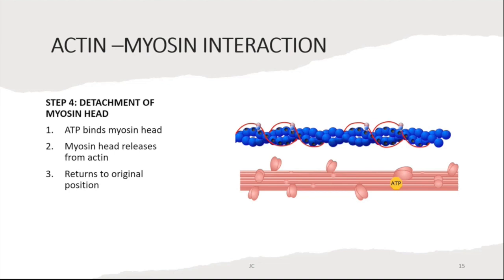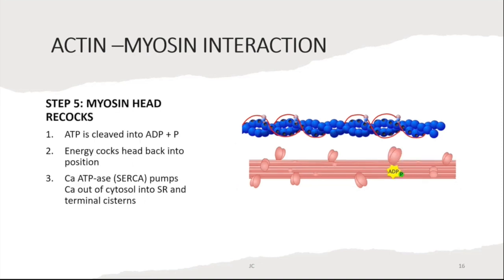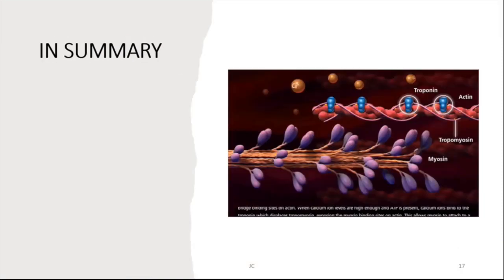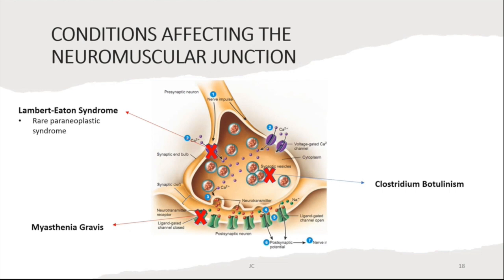This energy dependence explains why rigor mortis sets in after death when no ATP remains. Step five: the myosin head re-cocks when ATP is cleaved into ADP and phosphate, and that energy release cocks the head back into position. Calcium ATPase then pumps calcium out of the cytosol back into the sarcoplasmic reticulum and terminal cisterns. A summary graphic illustrates calcium binding troponin C, moving the troponin-tropomyosin complex, exposing myosin binding sites, myosin heads attaching and shortening to produce contraction, then relaxing once ATP binds.